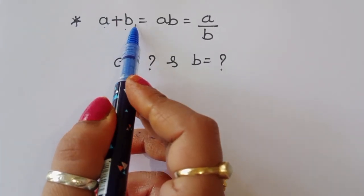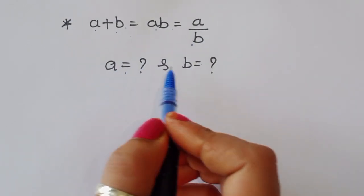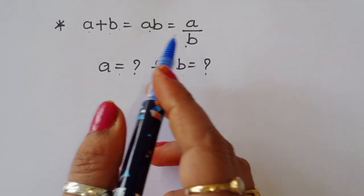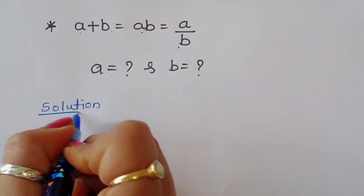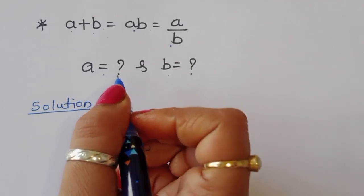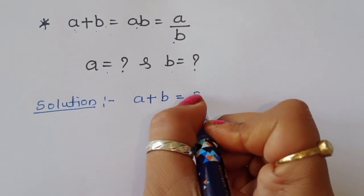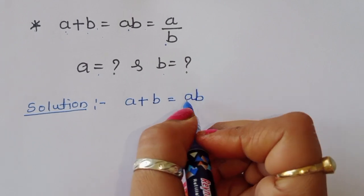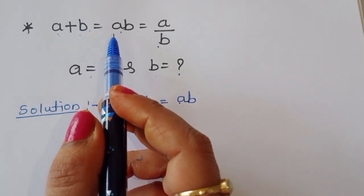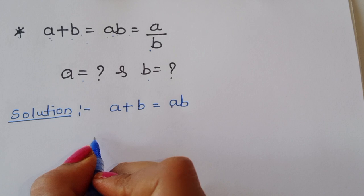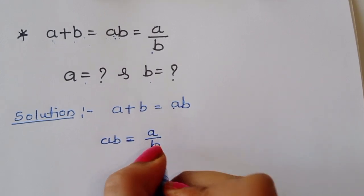The question is: given a + b = ab = a/b, we have to find out the value of a and b. Let's see the solution.